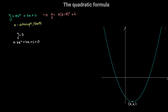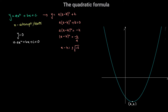If we set y equal to 0, we have a times (x minus h) squared plus k equal to 0, so a times (x minus h) squared equals negative k, which gives (x minus h) squared equal to negative k over a. Taking the square root of both sides, x minus h equals plus or minus the square root of negative k over a, and adding h to both sides gives x equal to h plus or minus the square root of negative k divided by a.